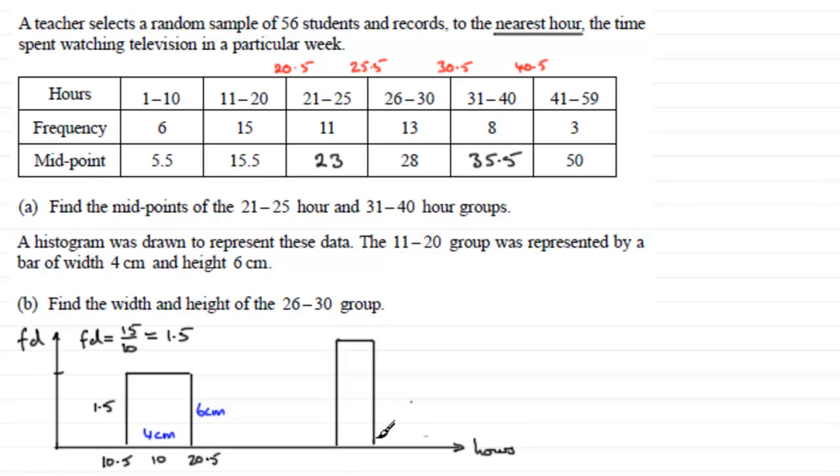This 26 to 30 group, the lower bound here is 25.5. And it goes up to 30, which is now 30.5. So you can see, hopefully, that the width of this interval is just 5 units. And we're trying to find out how many centimeters that will be. Well, it's pretty obvious because if this was 10 units for 4 centimeters, 5 units is half of that. So you can see the width is going to be 2 centimeters.